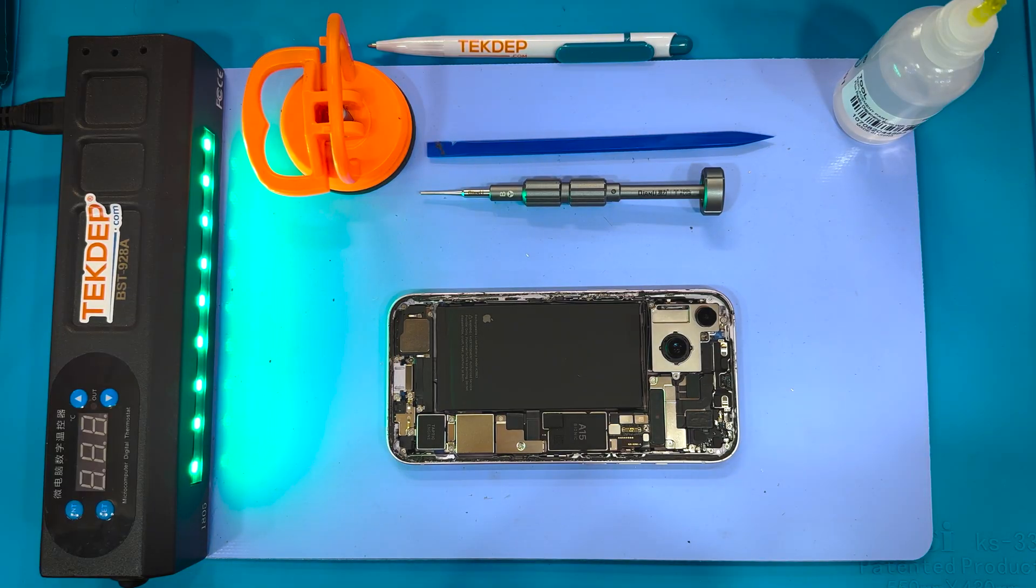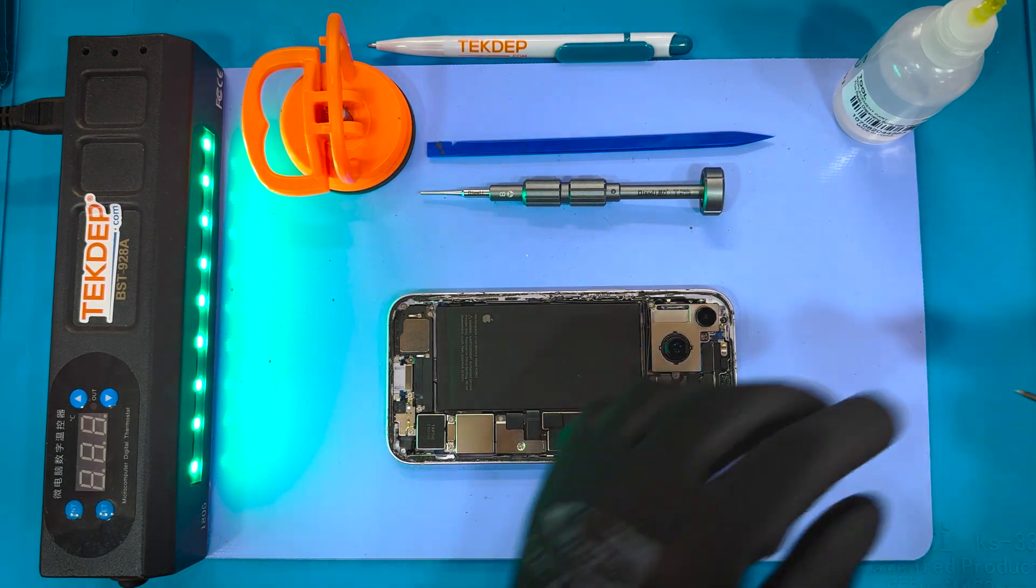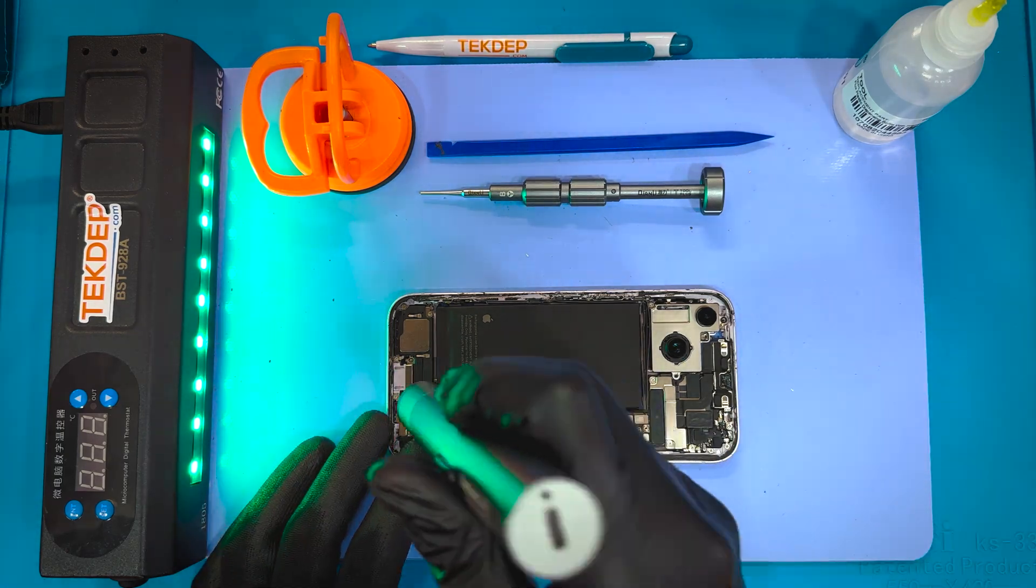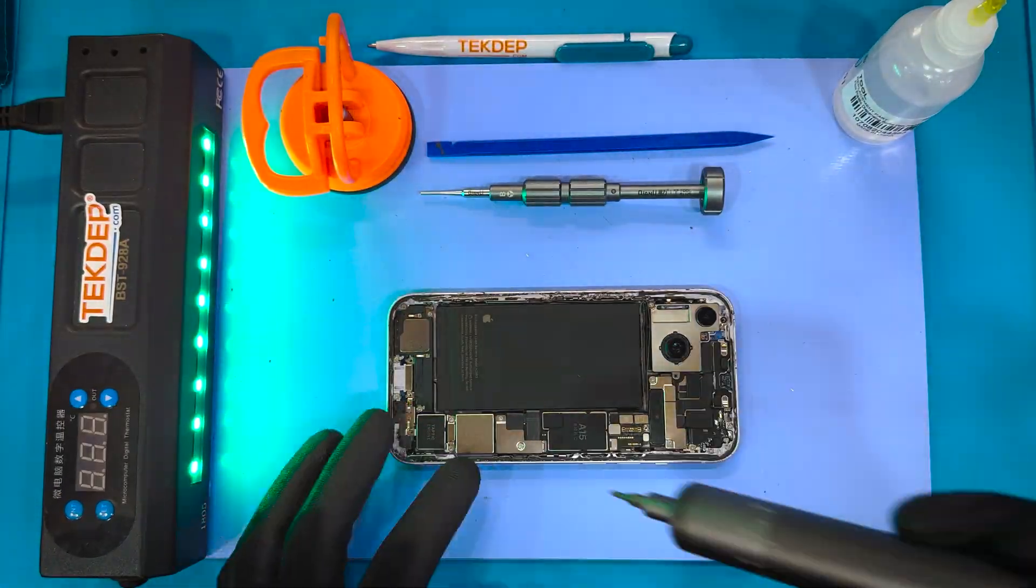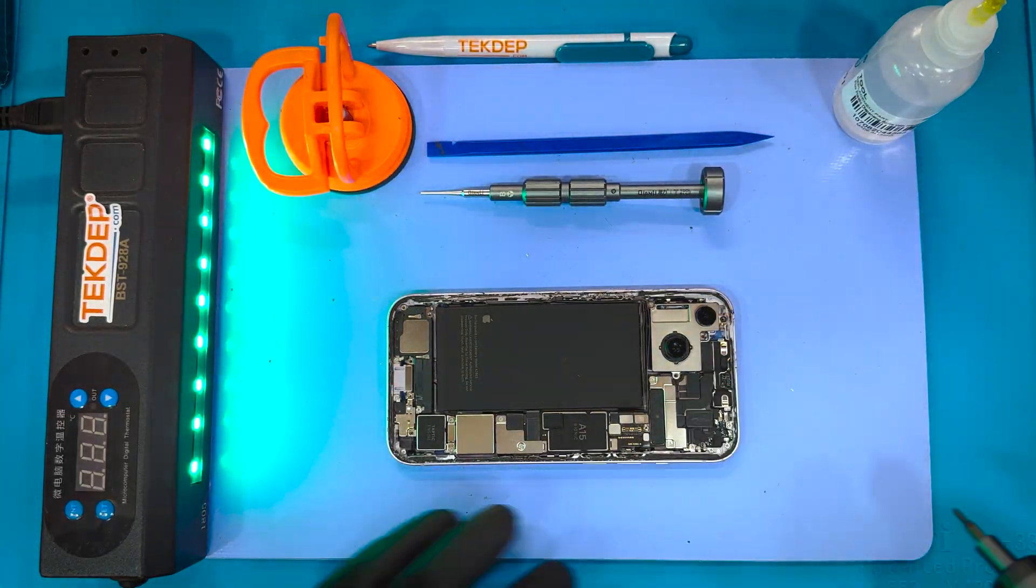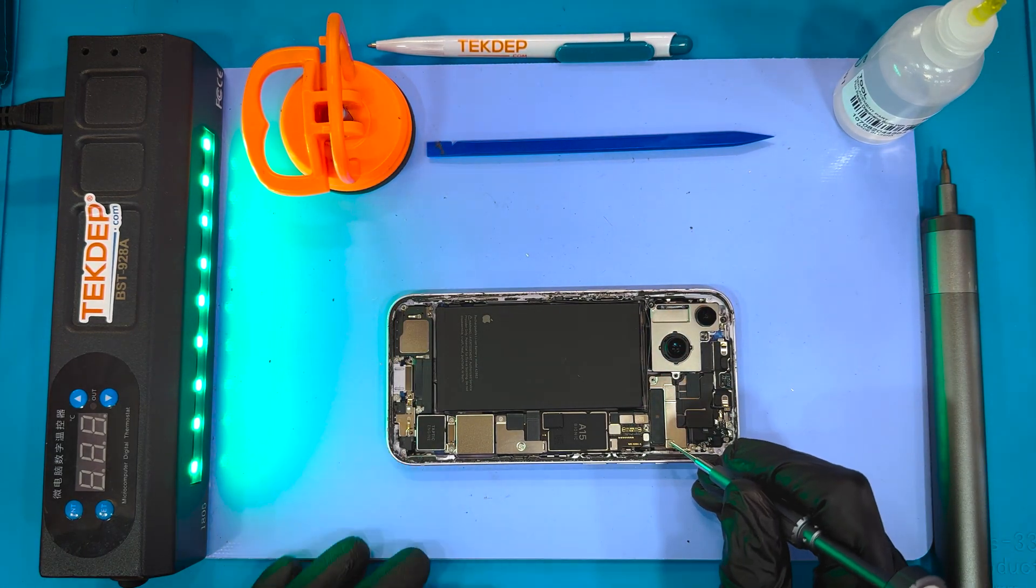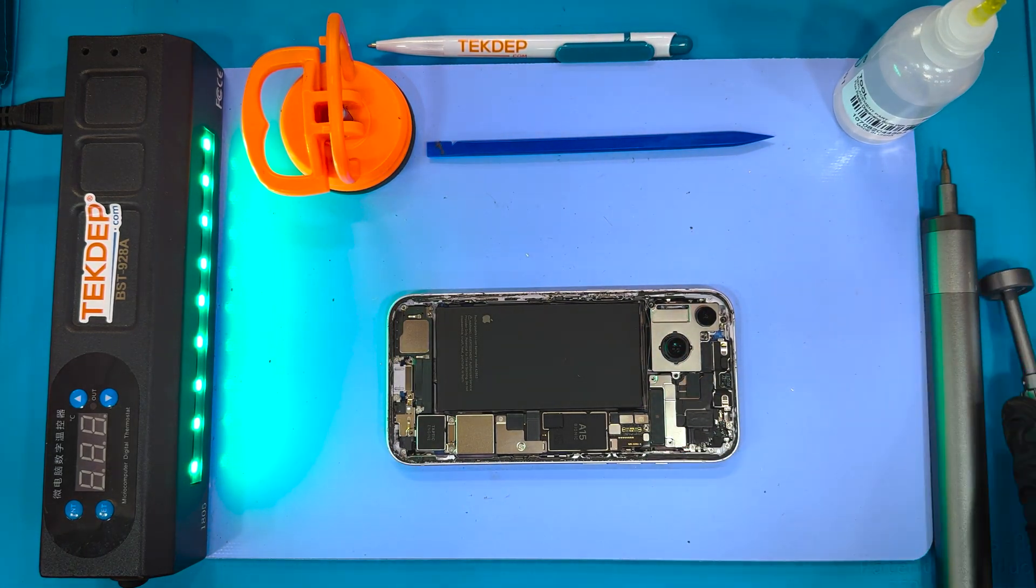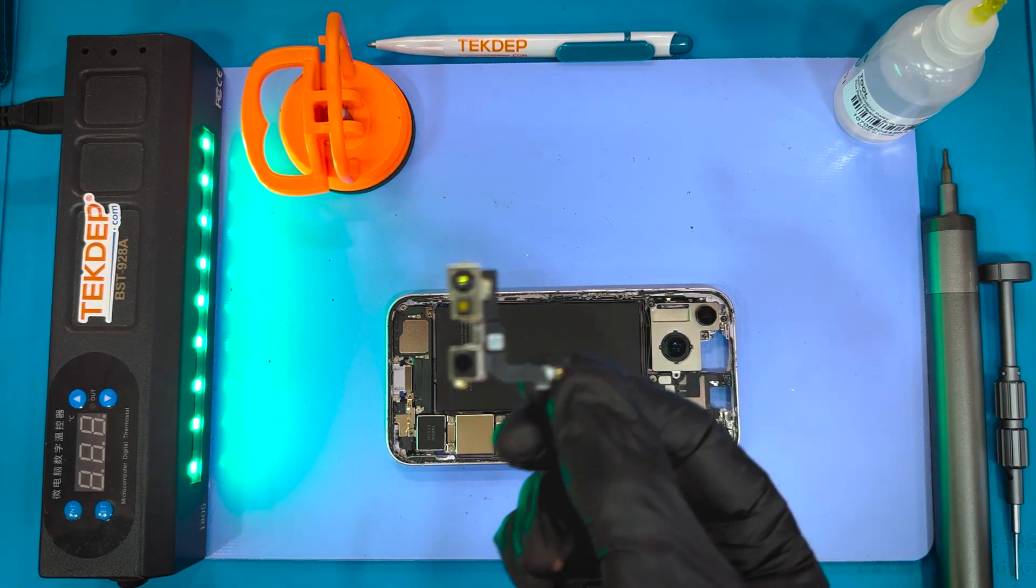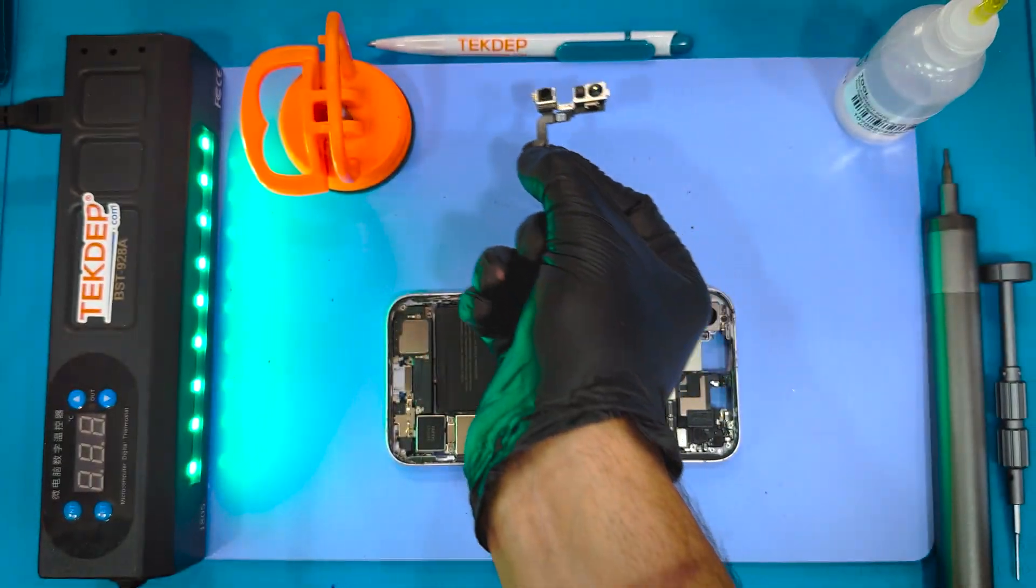The A15 bionic chip is really fast. They actually upgraded it for the 14 pro to the A16. It doesn't really make that much of a difference to tell you the truth, unless you're really pushing the phone to the edges of what is normal use, like serious gaming or editing maybe. You're not ever really going to notice the difference between that A15 and that A16.